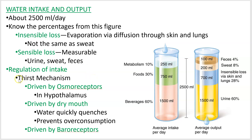What makes you thirsty? It's called your thirst mechanism. Osmoreceptors in your hypothalamus detect the solute concentration of your blood. If your blood becomes too concentrated — too many solutes — that's going to trigger your brain to make you want to drink. Also, if your mouth is dry, you want to drink water, which is a sort of evolved urge for us.